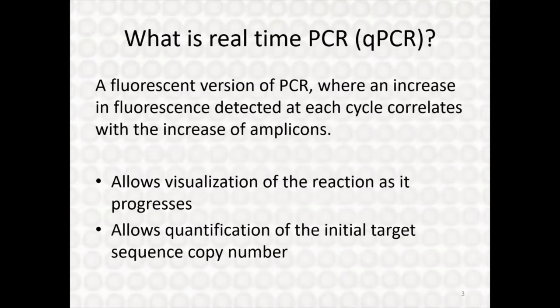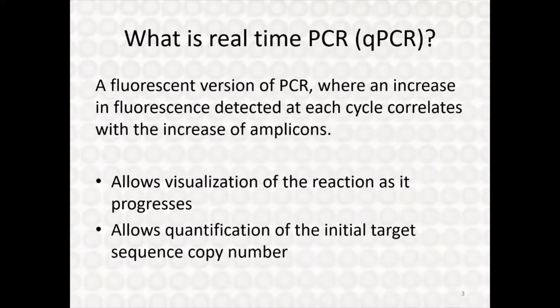Real-time PCR is really just a fluorescent version of regular PCR. You have an increase in fluorescence over time that matches the amount of amplicon that has been produced, and because all of this is captured with a camera you can visualize the reaction as it progresses rather than just looking at your final end product. The quantification is available to figure out your original target copy number — how many individual DNA targets were in that tube when you pushed run on the thermocycler.